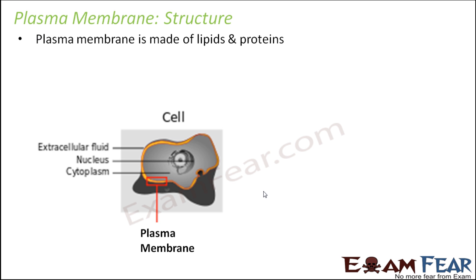The plasma membrane is made up of lipids and proteins — these are the main constituents of plasma membrane. When you actually look at the structure of plasma membrane, it is a bilayer of lipid molecules, that is two layers of lipid molecules with proteins embedded in it. That is how the structure actually is.